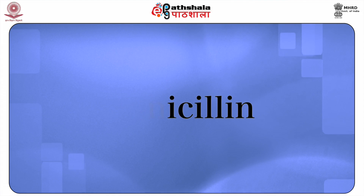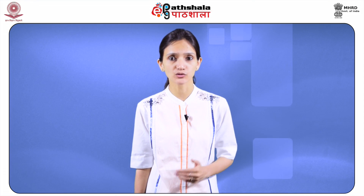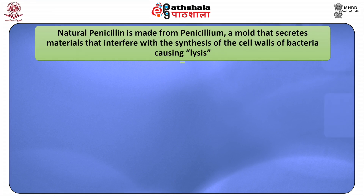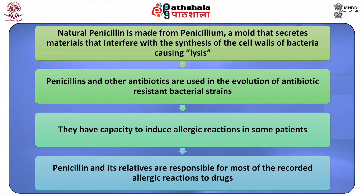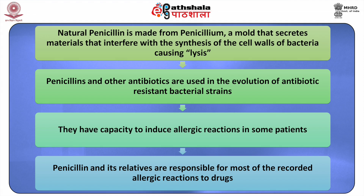Penicillin: One of the most commonly used antimicrobial agents is penicillin. Natural penicillin is made from a mould that secretes materials that interfere with the synthesis of the cell walls of bacteria, causing lysis or destruction of the cell membrane and destroying the invading microorganism. Penicillin is an assembly of antibiotics and was revealed by Scottish scientist Alexander Fleming in 1928. Concerns include its role in the evolution of antibiotic-resistant bacterial strains and its capacity to induce allergic reactions in some patients; penicillin and its relatives are responsible for most of the recorded allergic reactions to drugs.